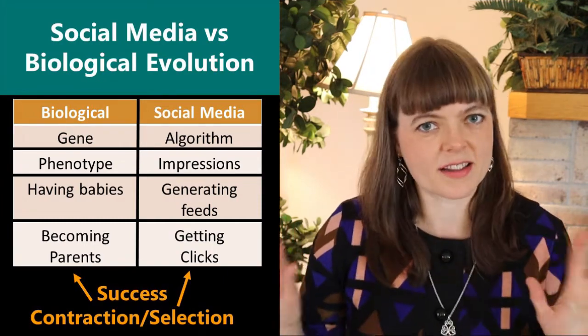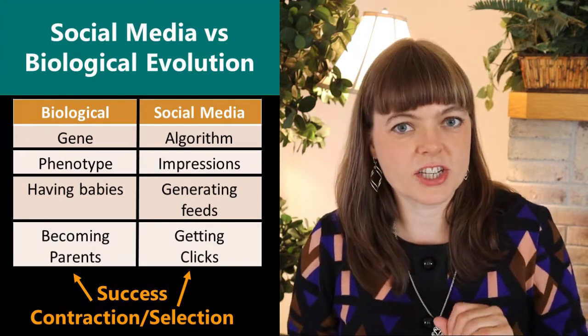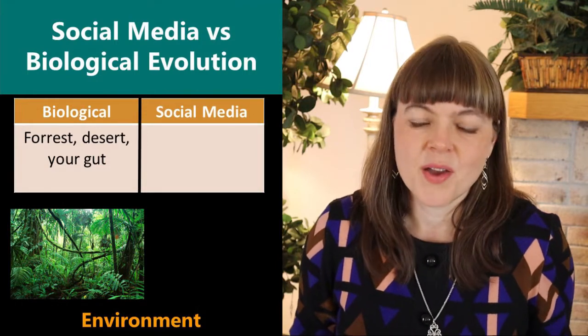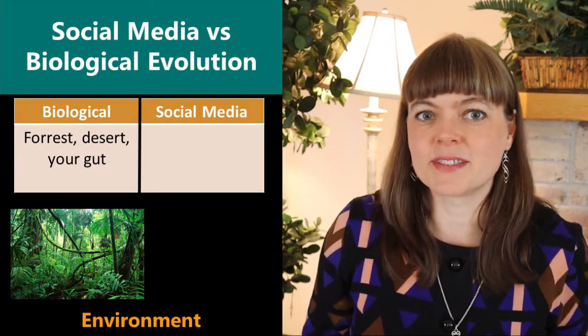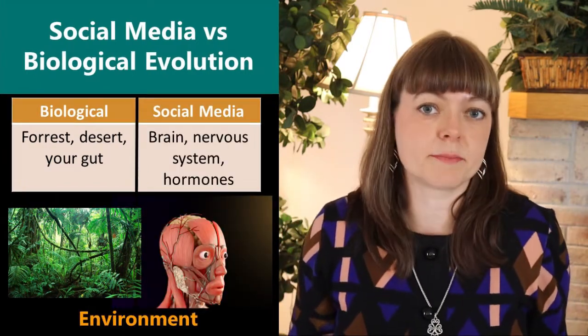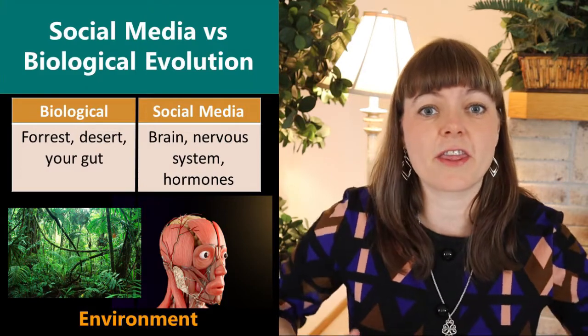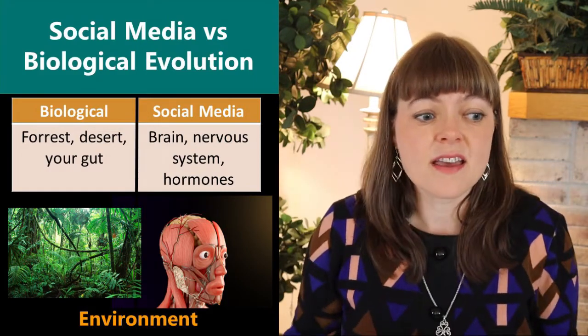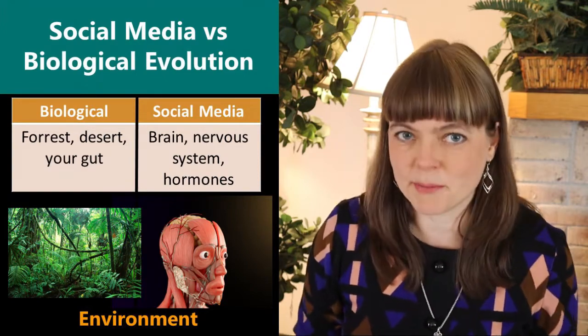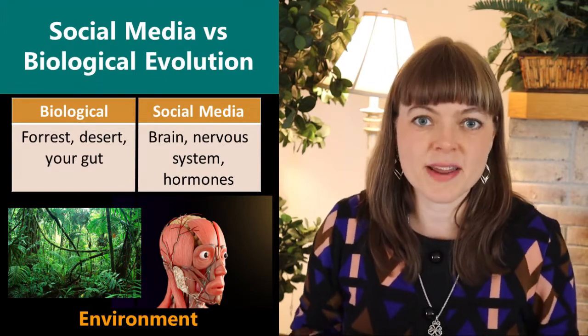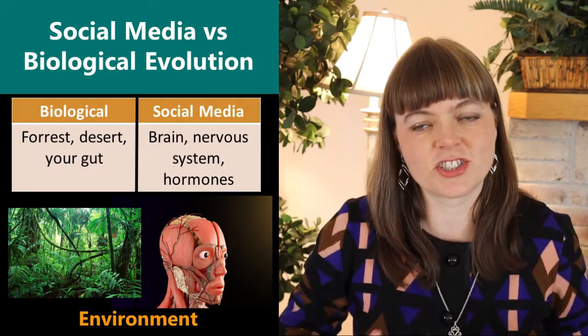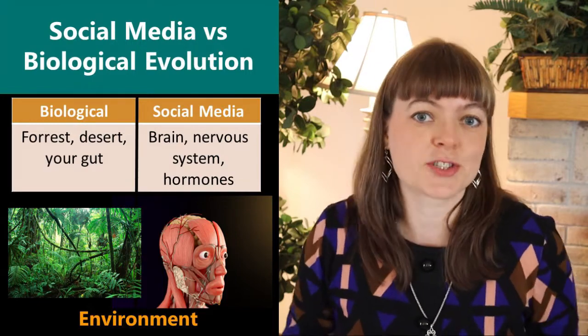So back to our analogies that we're making, what about the analogy to the environment in biological evolution? Well, in social media algorithms, the environment is essentially our brains, our nervous systems, our endocrine systems. It's basically the things in our bodies that motivate us to act, that motivate us to click or spend time on platform or write a comment. And so that's the environment that this content, this content generation machine is adapting to.